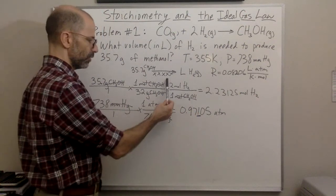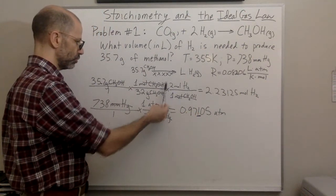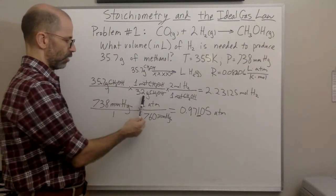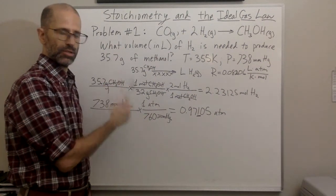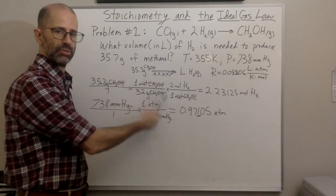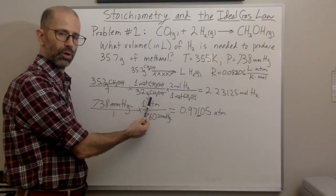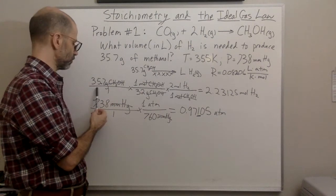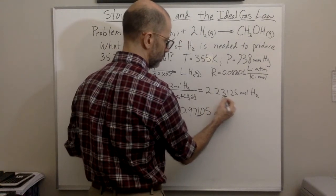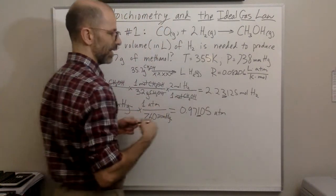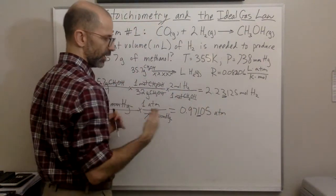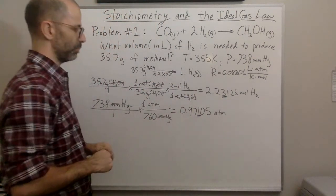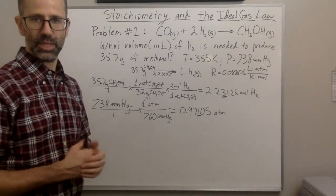This measurement has three significant figures and the molar mass typically goes out to more decimal places, so three sig figs is the least number here. To avoid rounding error I'll keep all the digits for now, but the rule of thumb is to keep one extra digit beyond what you're allowed.